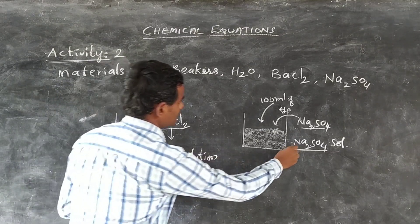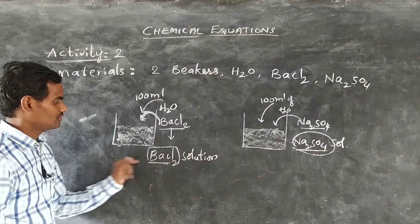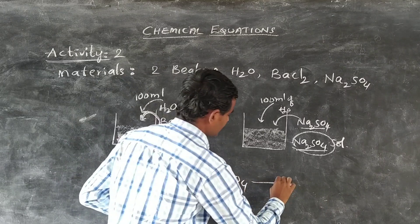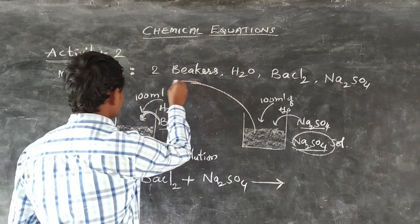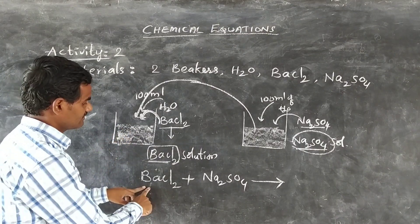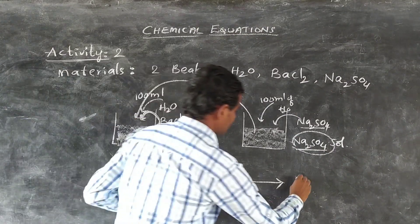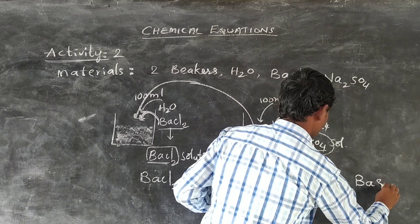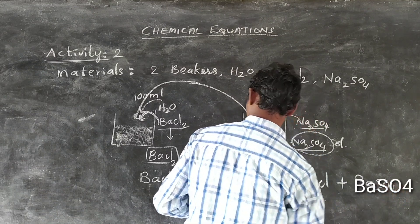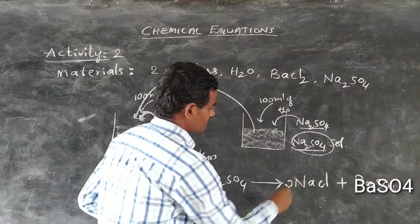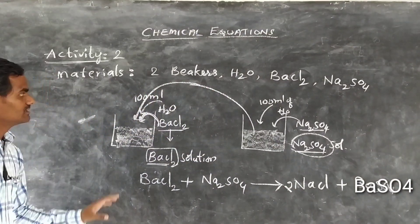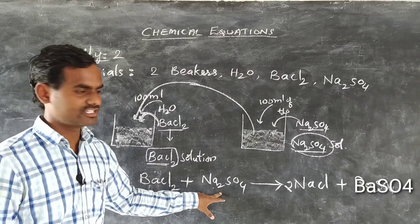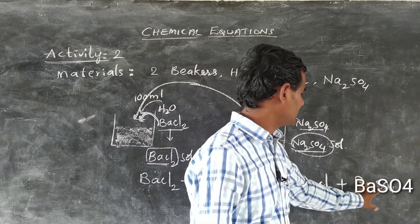If we add these two solutions — barium chloride solution and sodium sulfate solution — there is a reaction. When barium chloride reacts with sodium sulfate, it forms sodium chloride and barium sulfate. So, this is one more reaction between reactants barium chloride and sodium sulfate, and we get sodium chloride and barium sulfate as products.